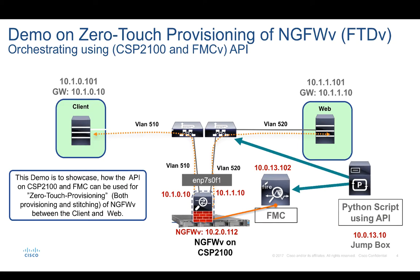This is the topology I'm going to use for this demo. It is a simple topology where I have a client and web server on two different VLANs, which are 510 and 520, also configured with IP addresses from two different subnets. I use this Python script to call the API of CSP2100 and Firepower Management Center to automate the provisioning of this virtual FTD on CSP2100 between the client and the web server network. As part of this demo, I've also created policies using the API to allow ICMP traffic and HTTP traffic between the client and the web server.